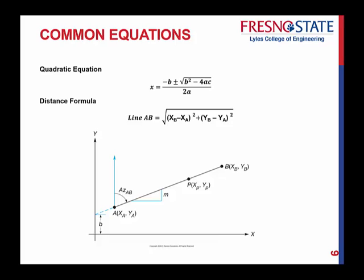If you have two points, that's inversing, or if you have coordinates of two known points, then you can get a horizontal distance between those two points by using this equation right here.